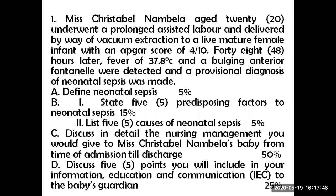So I've mentioned more than five predisposing factors: prematurity, RDS, contamination during labor, prolonged labor, and early rupture of membranes — those are the predisposing factors you can mention. Moving to question B2, which says: list five causes of neonatal sepsis. When it comes to causes, think from the angle of causative organisms.